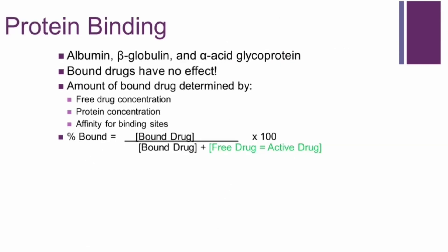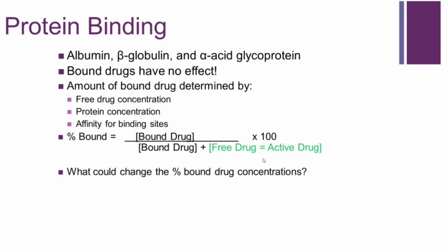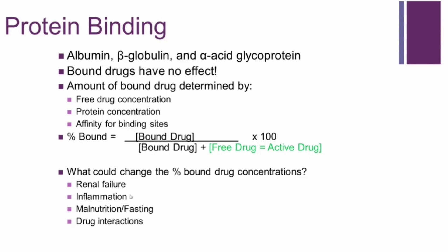Protein binding is also a very important kinetic term. It relates to the binding of the drug to plasma proteins such as albumin, beta globulin, and alpha-acid glycoprotein. Drugs bound to these proteins have no effect — so the free drug concentration is critical. The percent of drug bound is: (bound exposure) / (bound exposure + free exposure) × 100. The free fraction is the most important parameter as it is the active form of the drug. Factors that change protein binding include renal failure, inflammation, malnutrition or fasting, and drug interactions where two drugs compete for the same binding site.